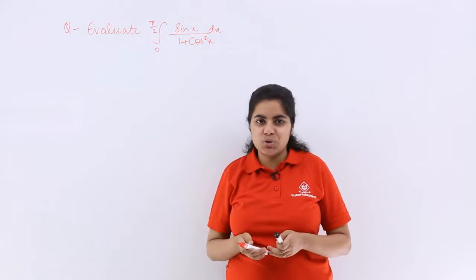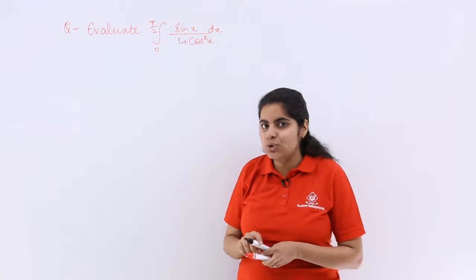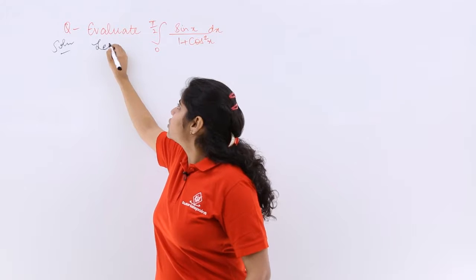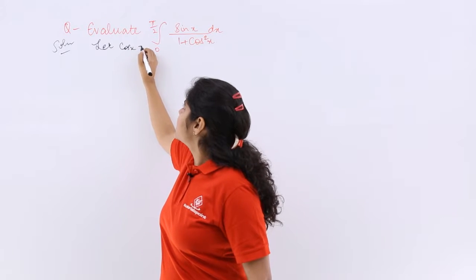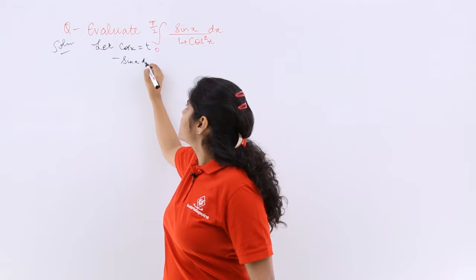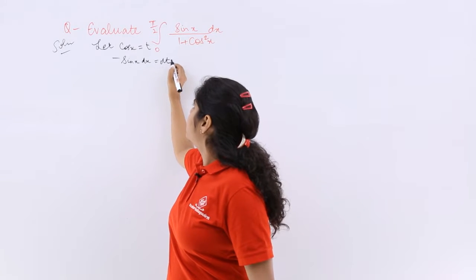Now let me go by substitution again. By substitution I can say that my solution would go as: let cos x equal t, that means -sin x dx equals dt.